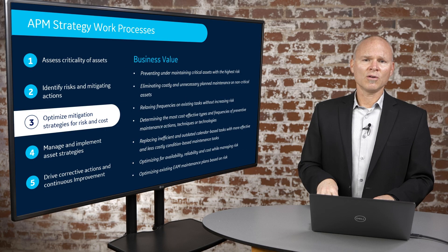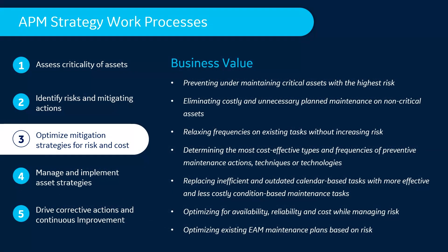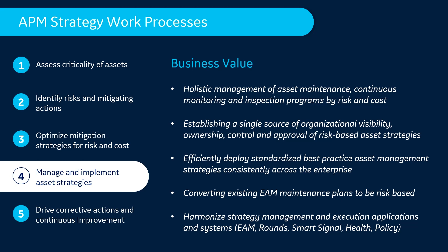This optimization process also involves analyzing existing maintenance plans and strategies a customer has in place — typically in their EAM system — evaluating those against known best practices for that asset, and eliminating, modifying, or adding activities that help achieve the desired objectives around risk mitigation, cost alignment, and keeping the asset healthy and reliable. Once we determine the optimal plan, we manage those strategies through an approval process to ensure asset strategies are managed appropriately before operationalizing them.